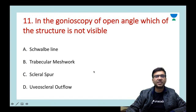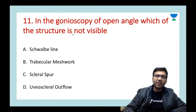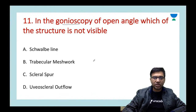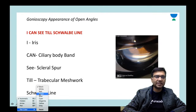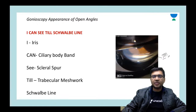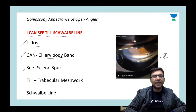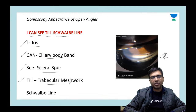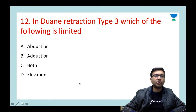Next question: in gonioscopy of open-angle glaucoma, which structure is NOT visible? Options: Schwalbe's line, trabecular meshwork, scleral spur, or uveoscleral outflow. We do not get to know about uveoscleral outflow from gonioscopy. The structures seen can be remembered with the mnemonic 'I Can See Till Schwalbe's': I = iris, C = ciliary body band, S = scleral spur, T = trabecular meshwork, S = Schwalbe's line.